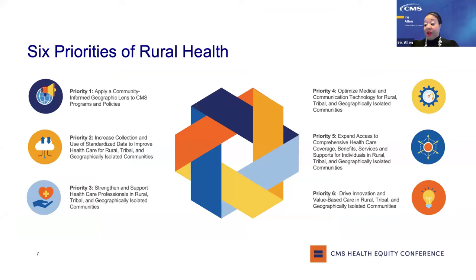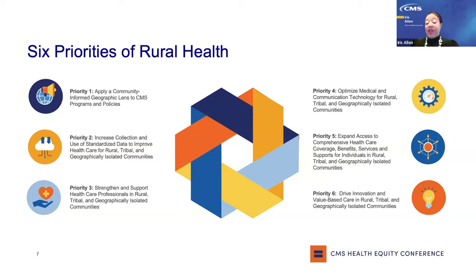Additionally, we wanted to run through the six priorities of our rural health framework. More than 61 million Americans live in rural areas, including rural, tribal, frontier, and geographically isolated territories. These Americans face several unique challenges in health care that can differ dramatically among the different kinds of rural areas across the country. As a result, CMS expanded the submission requirements to include the priority areas from the framework for advancing health care in rural, tribal, and geographically isolated communities. When we say geographically isolated communities, it is inclusive of frontier or remote communities, as well as U.S. territories and other island communities.